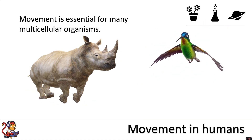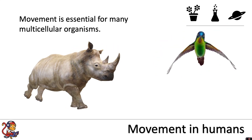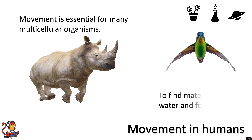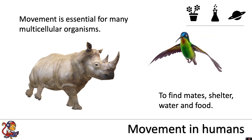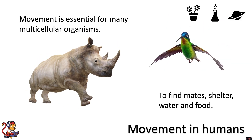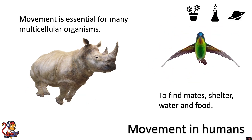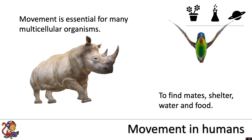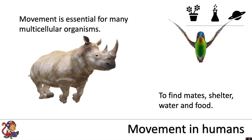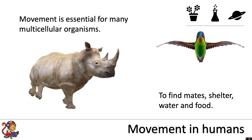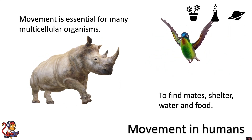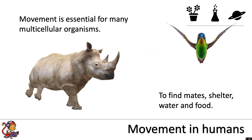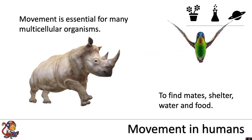Movement is essential for many multicellular organisms to find mates, shelter, water, and food. Today we're going to look specifically at movement in humans and how the skeleton, joints, and muscles are all involved in helping us move.